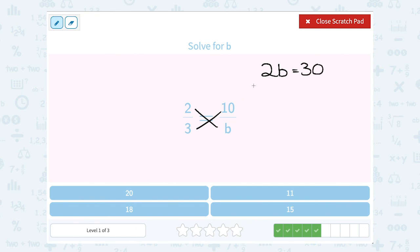To get b by itself, we're going to divide by 2. On the left, that cancels out, leaving us with b. And on the right, 30 divided by 2 is 15.